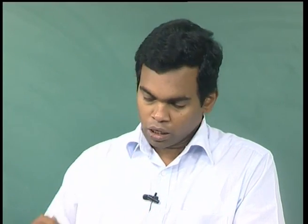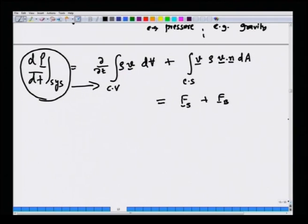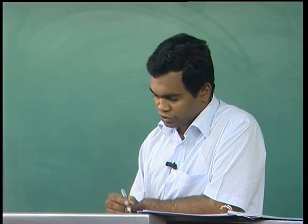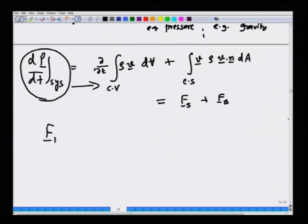This is the time rate of change of momentum of the system written in terms of control volume variables, which is most convenient when we try to solve problems using integral momentum balance. This equals the sum of forces, namely the surface force and the body force. The body forces we typically encounter are due to gravity: rho times the acceleration due to gravity vector g, integrated over the control volume.